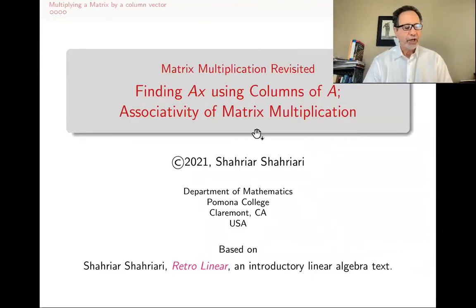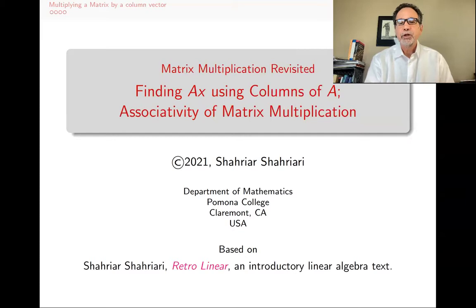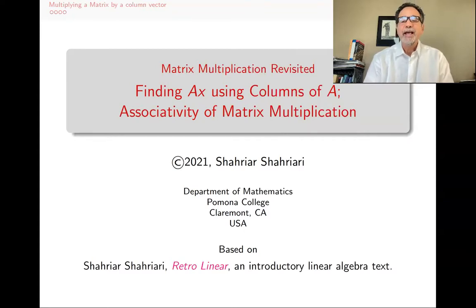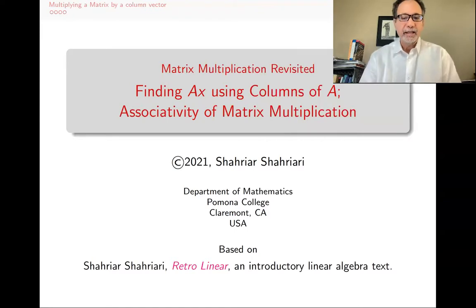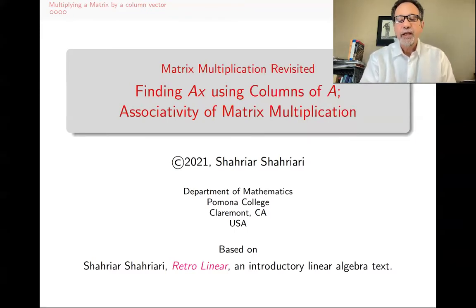Hello, my name is Shahriar Shahriari, and this is a lecture in a series of lectures on introductory linear algebra based on my book, Retrolinear. The subject of this lecture is talking about matrix multiplication again, and in particular, describing how you can multiply a matrix by a column vector using the columns of A as opposed to the rows of A. And then we will prove that matrix multiplication is associative, a very useful fact. So let's get started.